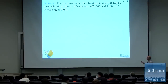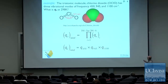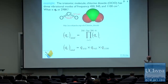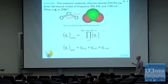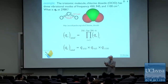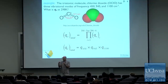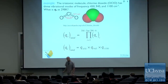So last Monday we were talking about this example — we were calculating the partition function for OClO, that molecule right here. We said all we have to do to calculate the overall vibrational partition function is calculate the partition function for each one of these modes separately and multiply them together. The modes are independent of one another thermally in terms of whether their states are occupied, so we can treat them independently.